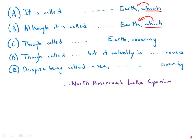Earth, which covers more than four times the surface area of its closest rival in size, the North American Lake Superior. That doesn't make any sense. What we want it to refer to is the Caspian Sea, but the placement here is quite unclear. So that's a big problem with these two.